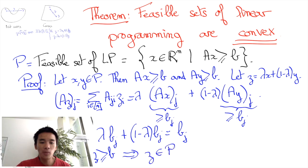Thus any point in between two points of P is still in P. This proves that the feasible set of linear programming is indeed convex, QED.